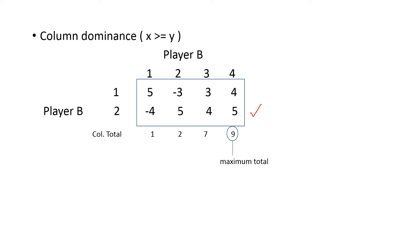Now coming to column dominance. After row dominance, we proceed to column dominance. For column dominance, the condition is that x value should be greater than or equal to the corresponding y value. Find the column total: for the first column it is 1, for the second it is 2, for the third it is 7, and for the fourth it is 9. From the column total, find the maximum total, which here is 9. Apply the column dominance rule the same way as discussed.